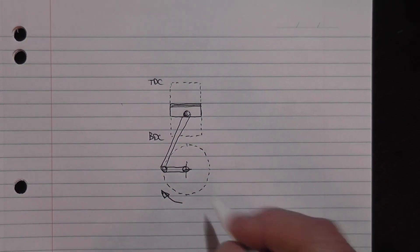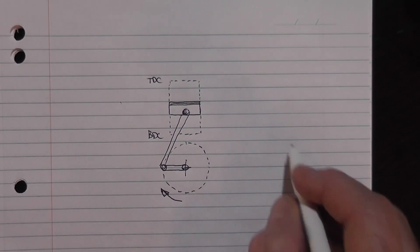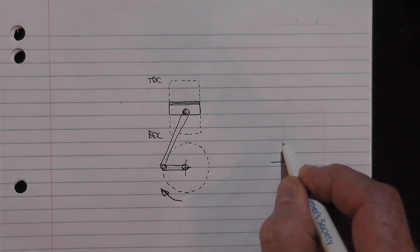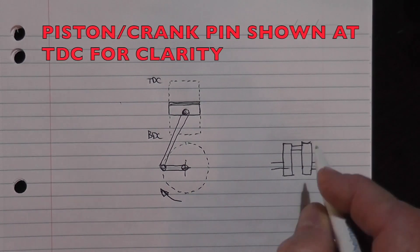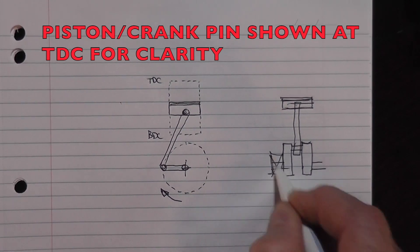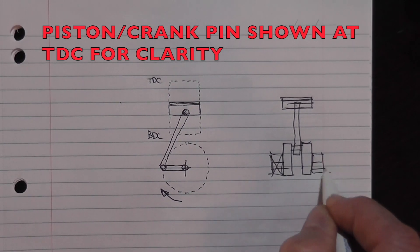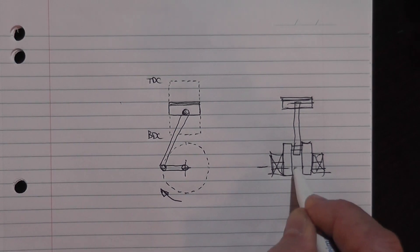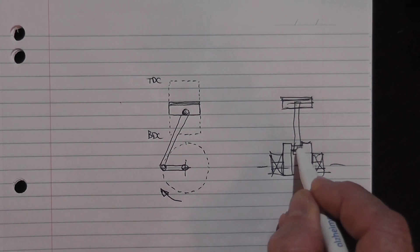In that view of course it will look somewhat like this. So you've got a bearing here, a bearing here, your crankshaft through here and this is your con rod pin.